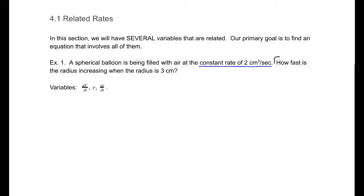We want to pay attention to this last statement. This tells us that at some point we are going to take the radius to be 3. And dr/dt — how fast the radius is increasing — is what we want to know. At the very end, we are going to take that to be the case. The radius of our spherical balloon is not 3 centimeters yet, but at some point it will be.